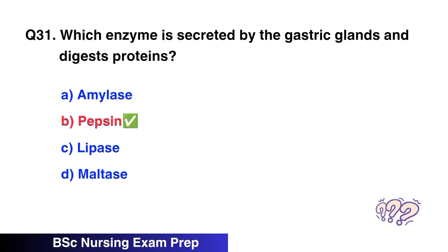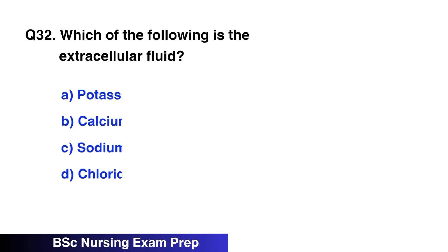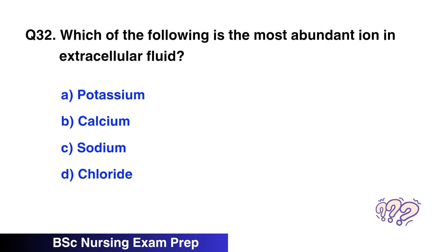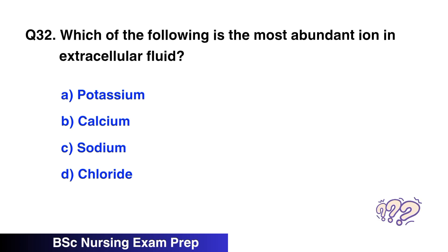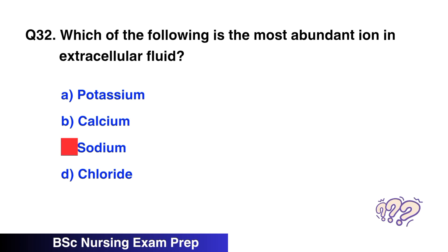Question 31. Which enzyme is secreted by the gastric gland and digests protein? The correct option is B, pepsin. Question 32. Which of the following is the most abundant ion in extracellular fluid? The correct option is C, sodium.